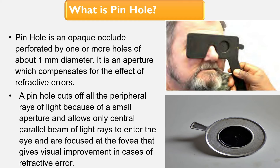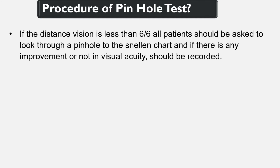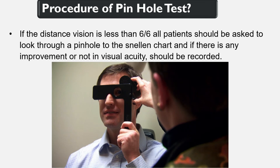Now, let's know the procedure to test the pinhole. Procedure of pinhole test: if the distance vision is less than 6/6, the patient should be asked to look through a pinhole to the Snellen chart, and whether there is any improvement or not in visual acuity should be recorded.